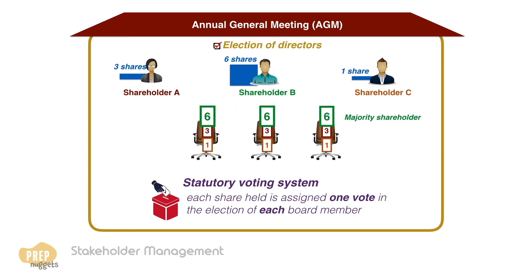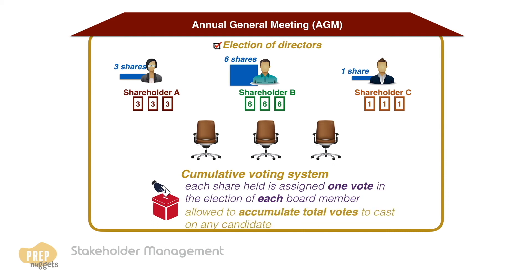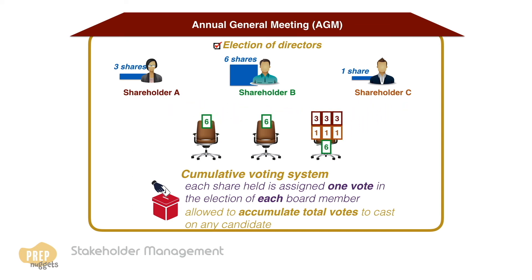Shareholder B has six votes for each seat, so he can choose to place six votes for the three candidates of his choice, thereby all three of the board members elected will be his choice. To better serve shareholders who own a small number of shares, cumulative voting is often used. Under this system, shareholders are allowed to accumulate their votes to cast on any candidate they wish. So in this case, the minority shareholders can arrange to cast all their votes on one candidate. Numerically, the major shareholder cannot be assured to be able to decide on every board seat.